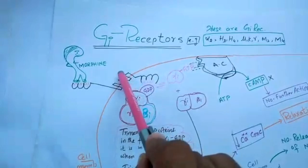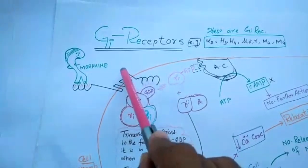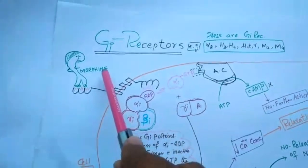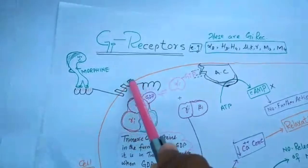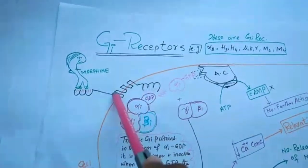Let's suppose this is an opioid receptor. Opiates like morphine are agonists for this mu receptor.